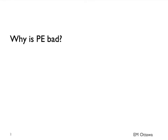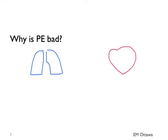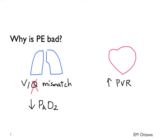Why is PE a bad thing? Acute PE causes two main problems: respiratory problems and cardiac problems. For the lung, acute PE causes ventilation-perfusion mismatch. More specifically, there are now parts of the lung that have ventilation but no perfusion, and that causes hypoxemia. For the heart, pulmonary embolism causes increased pulmonary vascular resistance, causing a strain in the right ventricle. If it is severe, it can lead to cardiovascular collapse.